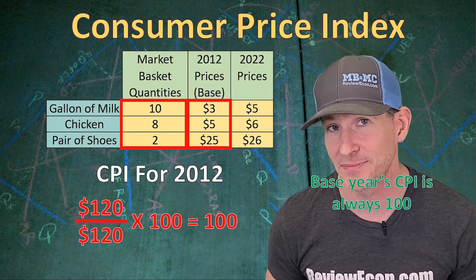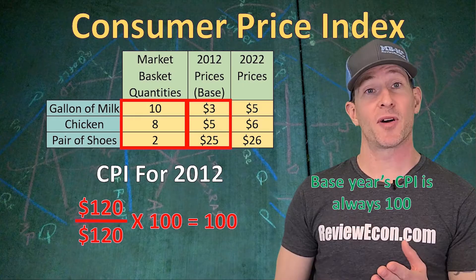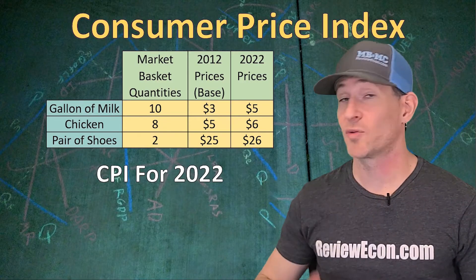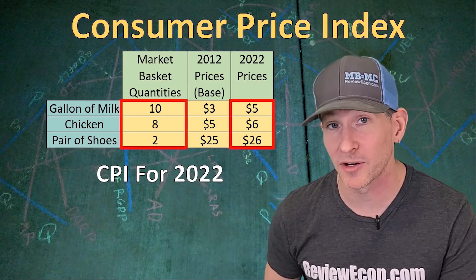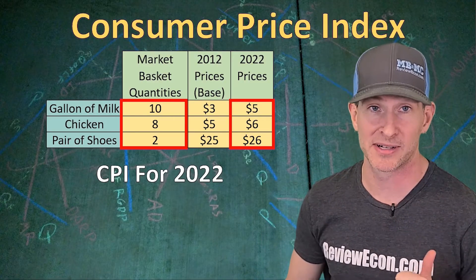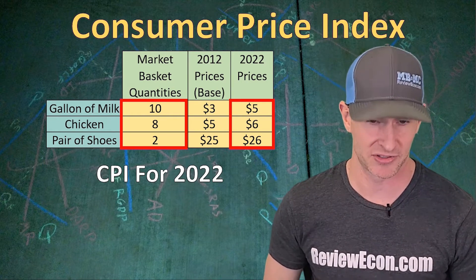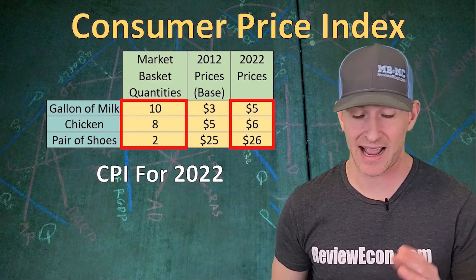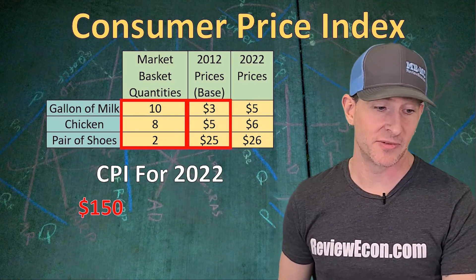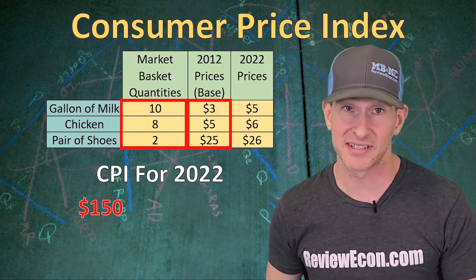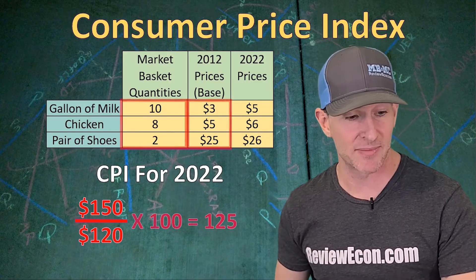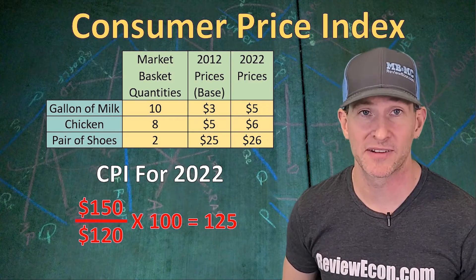The base year's CPI is always going to be 100, because the value of the market basket in the current year equals the value in the base year. Next, we calculate the CPI for 2022 using the same quantities but 2022 prices: $5 for milk, $6 for a chicken, and $26 for shoes. That gives us 10×5 + 8×6 + 2×26 = $150. Divided by the base year value of $120, times 100, that gives us a CPI of 125 for 2022.